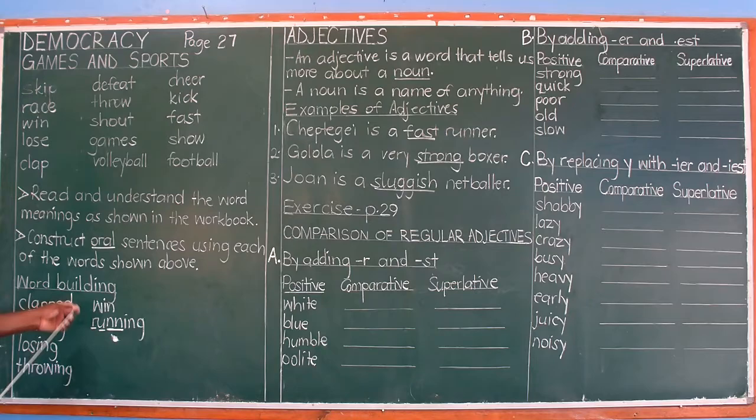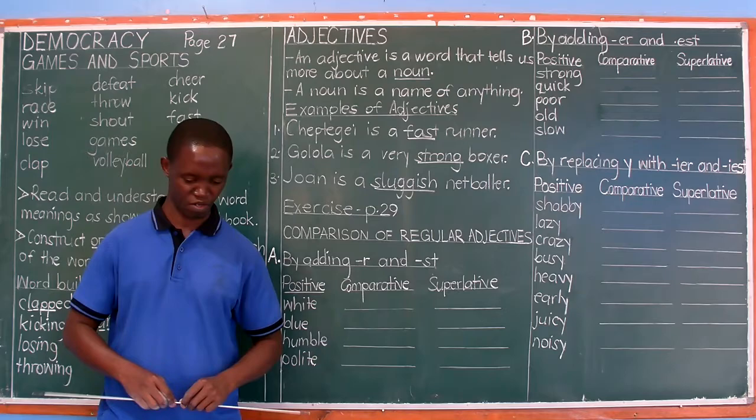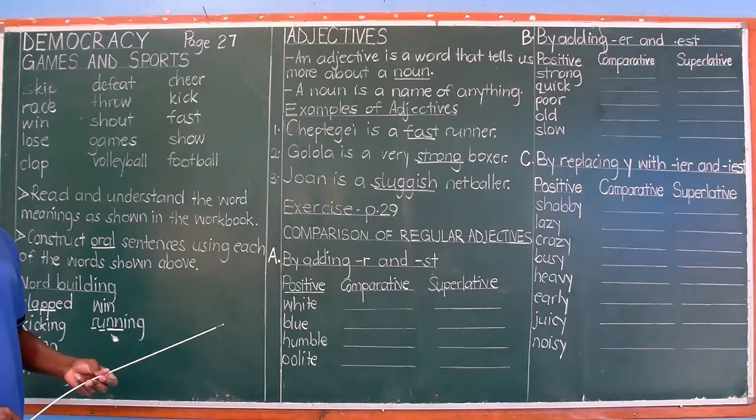After that, you will do an activity — the word formation and transformation table, or word building table. There is an activity on page 28 about using the correct forms of words given in brackets to complete those sentences. There are only 10 questions. Answer those 10 questions, and after that we will proceed to adjectives.